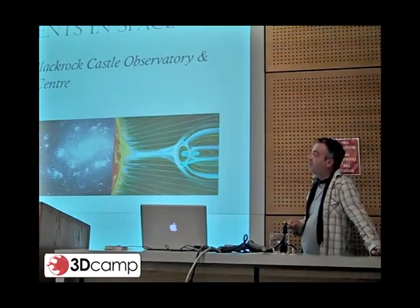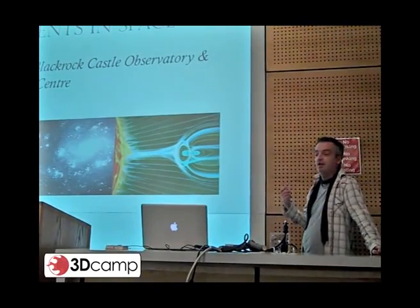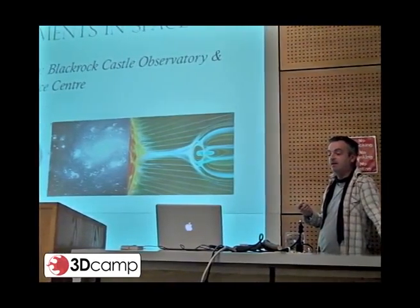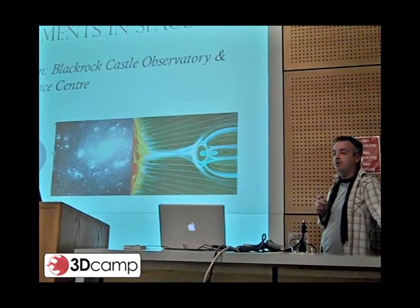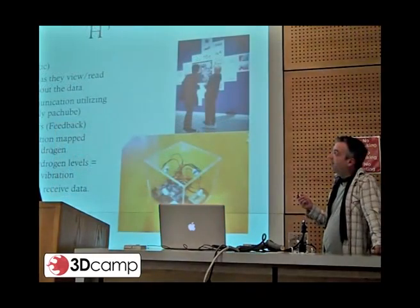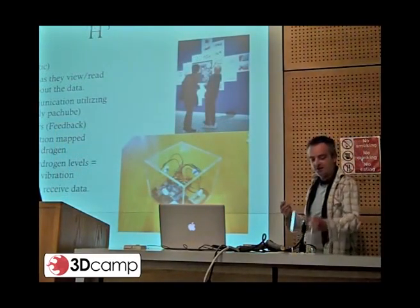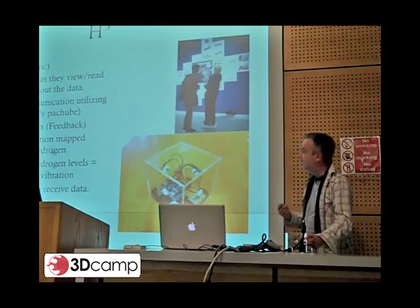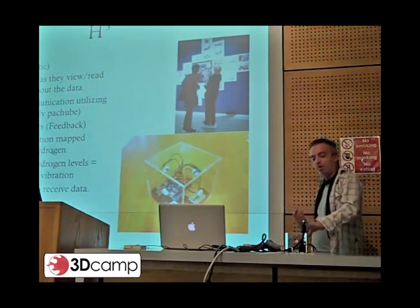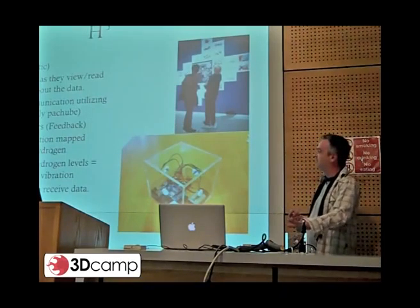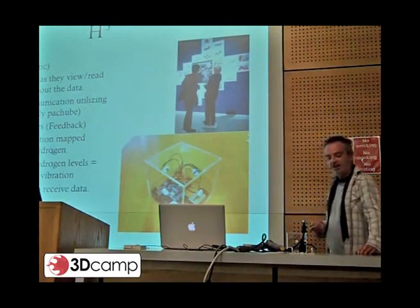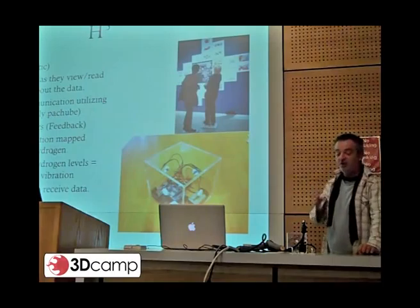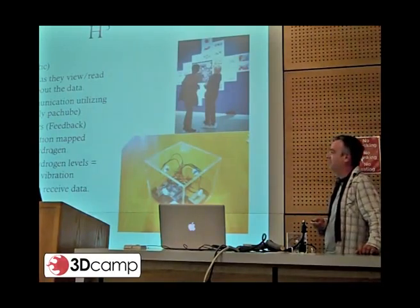I started a project in collaboration with Blackrock Castle Observatory and the National Space Center, using live data from two radio telescope dishes — one based in Middleton and the other in Blackrock. This is the Hydrogen Cubed, and this is it in its present format. It's a working prototype that was finished at about 3 a.m. this morning, so I'll cautiously turn it on in a few minutes.